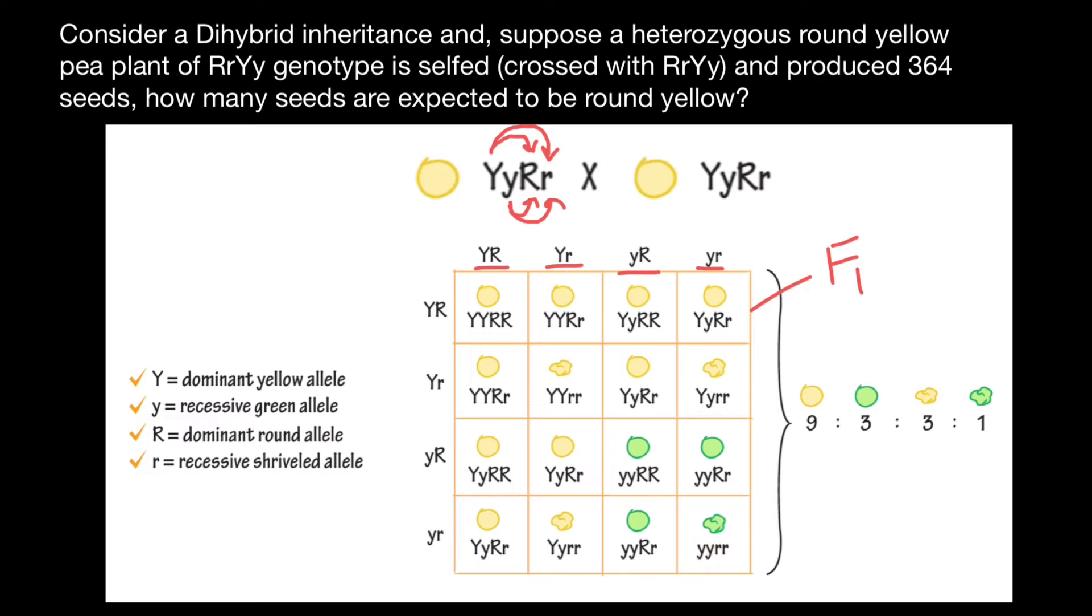But here we have small y, small y, two recessive alleles that specify color. Because of these two recessive alleles, color is going to be green. And because here we have two recessive alleles which specify whether it's going to be round or wrinkled, this is going to be wrinkled.